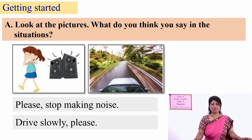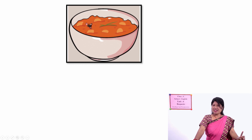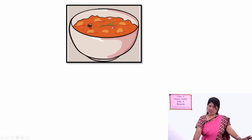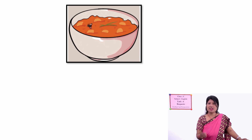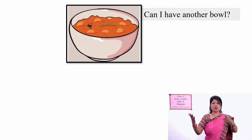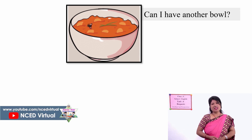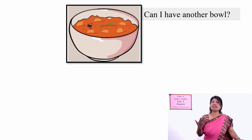Some more pictures — what is this? A bowl of soup. Unfortunately, what can you see? A fly — a house fly has fallen in the soup. Now is it drinkable? Obviously not. If you are given this bowl of soup, what request do you make? We can say, 'Can I have another bowl of soup?' because you cannot drink this one. In this way you can make a request using 'Can I.'